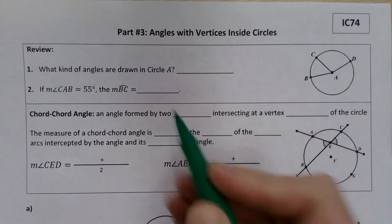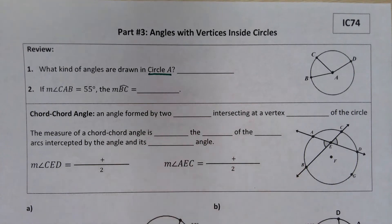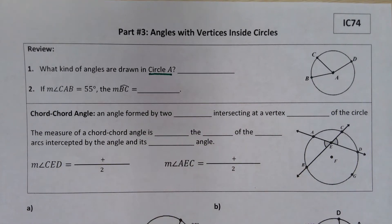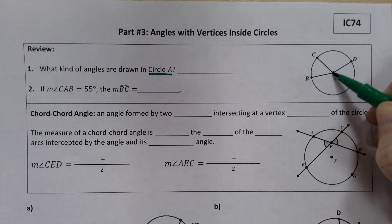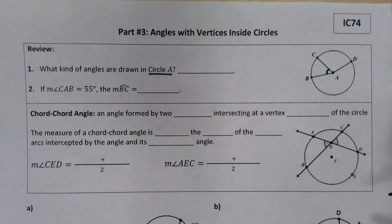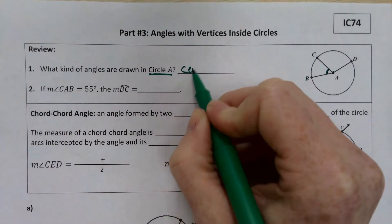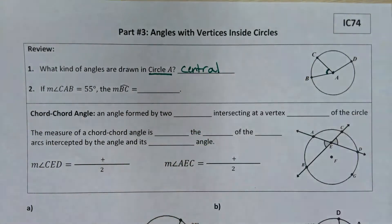Point A, since the circle is named circle A, is the center of the circle. So think back to what we called angles that are formed by two radii. Segment CA and segment BA are radii that intersect at the center of the circle. If you're guessing or you're remembering central angles, you are correct.